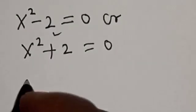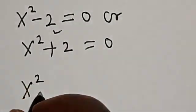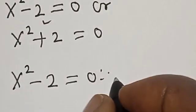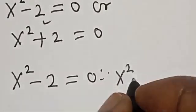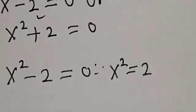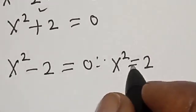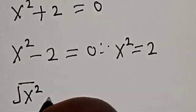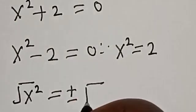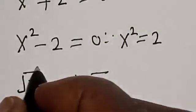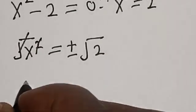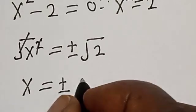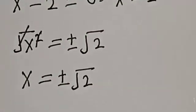From the first case: x squared minus 2 is equal to 0. Therefore, x squared is equal to 2. Taking the square root of both sides, x is equal to plus or minus square root of 2.